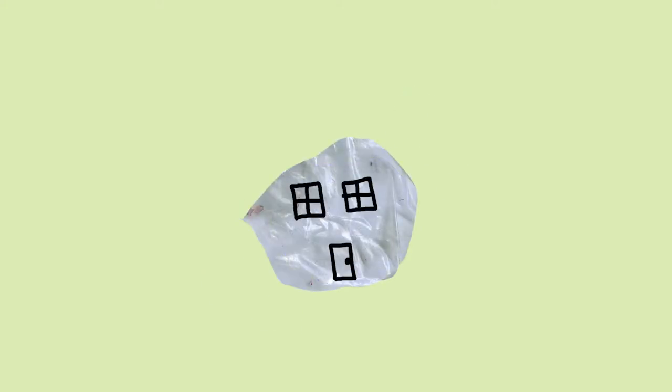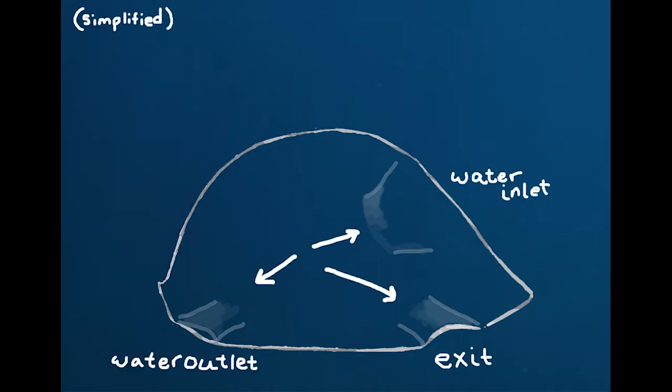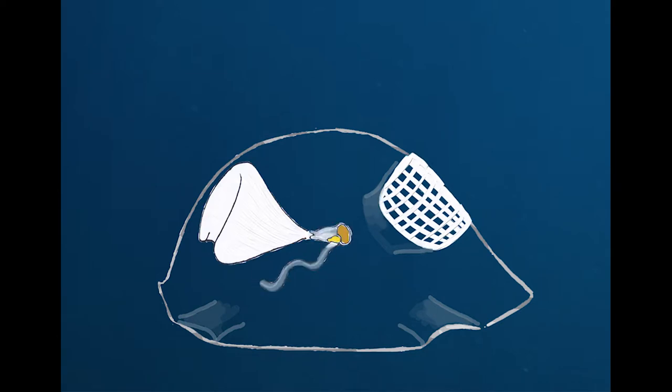This home has channels running through it and filters crossing the channels. Oicaplera lives in the center of the home and beats its long tail to drive a current through the channels.